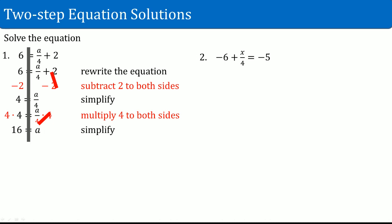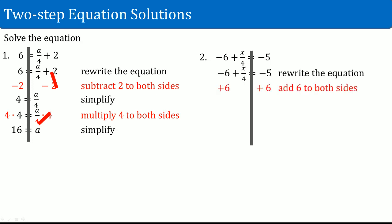Number two: negative 6 plus x divided by 4 equals negative 5. Rewrite the equation and draw the line straight down. What is attached to the x on the left-hand side is a divide by 4 as well as a minus 6. We want to get rid of the minus 6 first, so you can add 6 to both sides. That cancels on the left-hand side, leaving x divided by 4. On the right-hand side, negative 5 plus 6 becomes 1.